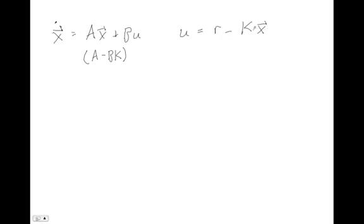But fundamental to this controller is the assumption that we know the states x. That might not be a safe assumption. In practice, what we really know is y — our output, the thing we're sensing that we want to control — but we may not know all of the states. To implement this control scheme, we really need to know our full state vector.